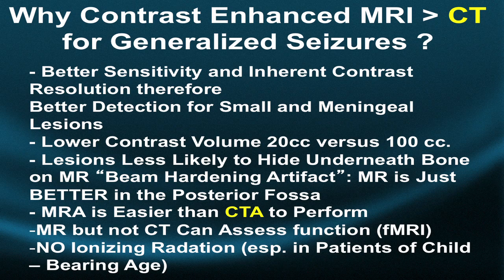MRI is better in the posterior fossa of the brain as well as the supratentorial brain, and the lower you go in the brain, the more superior MRI is to CT in detecting a serious problem. MRA is also easier to add on to a contrast-enhanced MR exam without making another injection, which is not possible with CT.